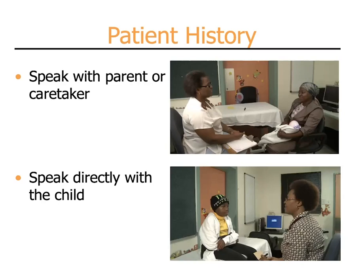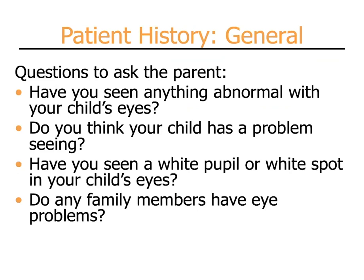The first step in performing eye screening is to speak with the parent or caretaker and obtain a history. If possible, speak directly with the child. General questions to ask are: Have you seen anything abnormal with your child's eyes? Do you think your child has a problem seeing? Have you seen a white pupil or white spot in your child's eyes? Do any family members have eye problems? The last question should always be kept in mind, as many eye conditions are hereditary and passed on from one generation to another.